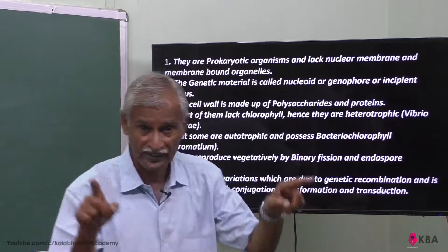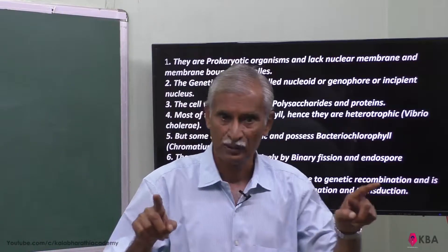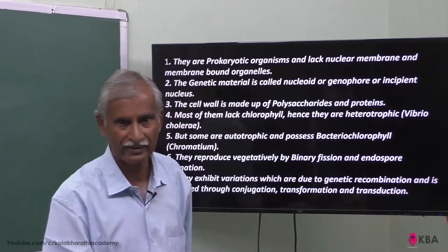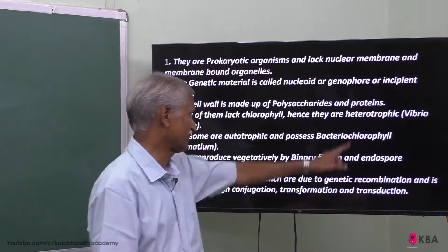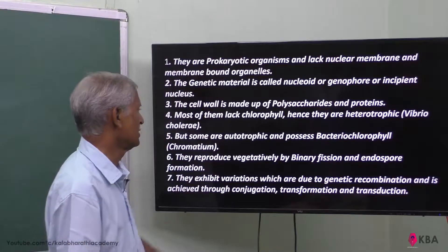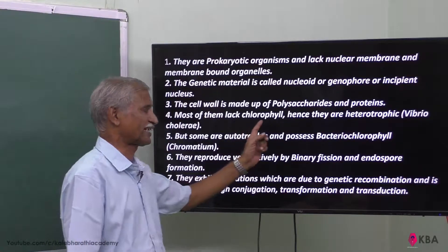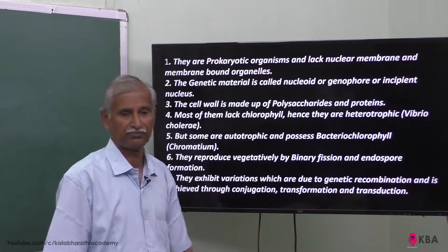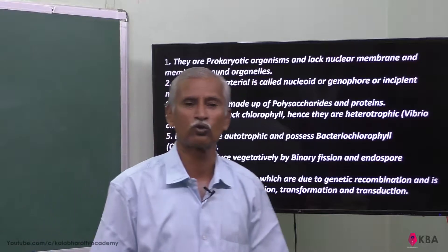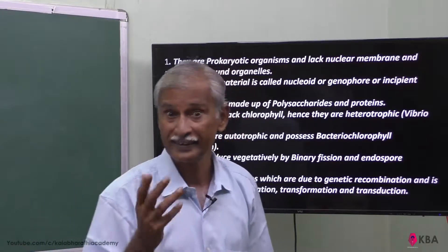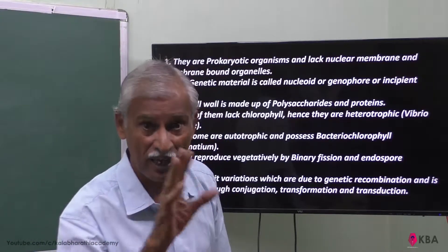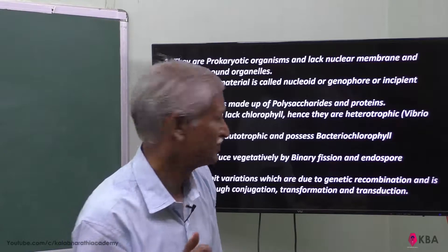The outer cell wall is composed of polysaccharides (carbohydrates) and proteins combined. Most bacteria lack chlorophyll, so they are heterotrophs. However, some bacteria that contain bacteriochlorophyll are autotrophs.